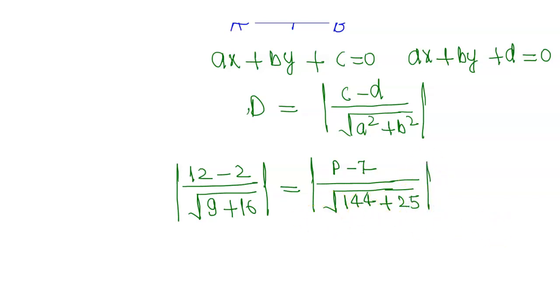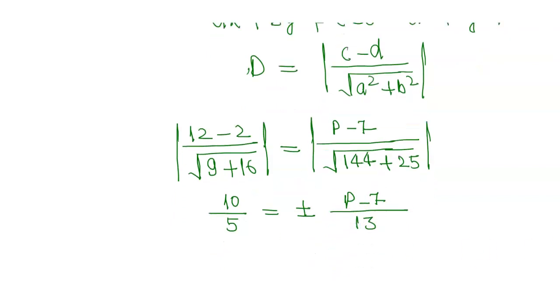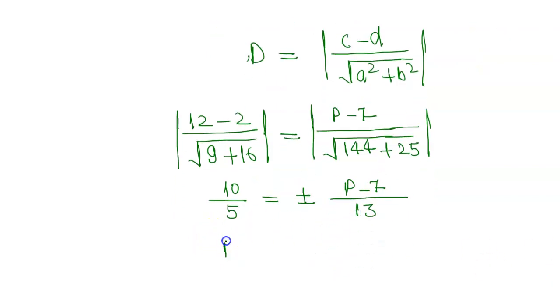Since the distances must be equal, we have |p - 7| / 13 = 2. Therefore |p - 7| = 26, which equals plus or minus 26.